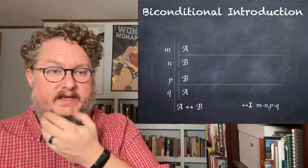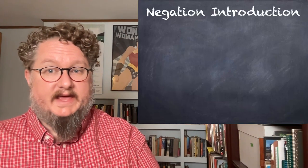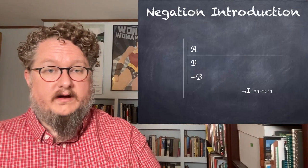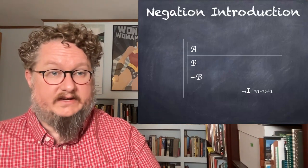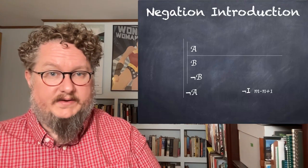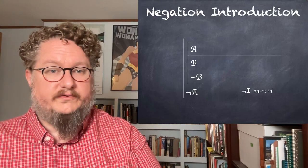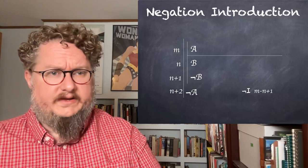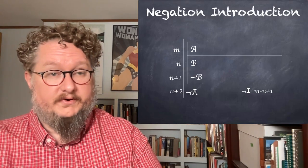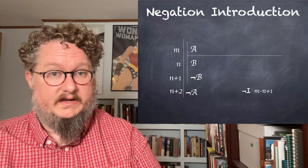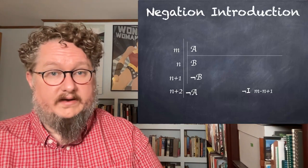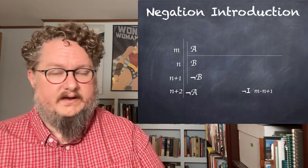Interestingly, both of our negation rules are indirect proof rules. With negation introduction, we assume some arbitrary sentence A, and what we are trying to derive is a contradiction — two lines which have B and not-B on subsequent lines. This allows us to introduce the negation of A. The reason is: we know that both B and not-B cannot both be right. So if assuming A generates a contradiction — two logically incompatible sentences B and not-B — then we know A must have been wrong. Not-A must be the case.